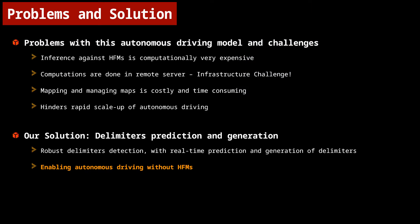However, inferring a vehicle's global accurate position against HFMs is computationally very expensive. It requires remote servers to compute, presenting an infrastructure challenge and making it difficult to scale up autonomous driving. We thus developed algorithmic frameworks that not only detect delimiters but generate them in real time where they ideally should have been, in case the delimiters are faded, absent, or not clearly visible in an environment.